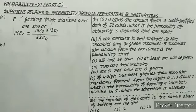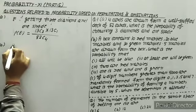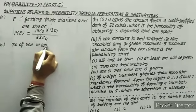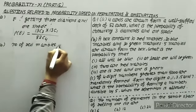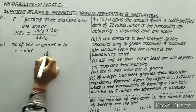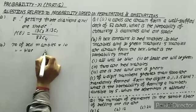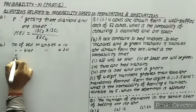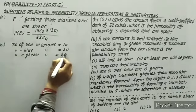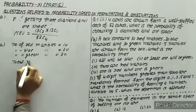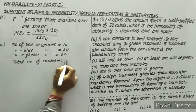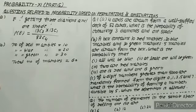In the second case, a box contains 10 red marbles, 20 blue marbles, and 30 green marbles. So the total number of marbles is 10 + 20 + 30 = 60.